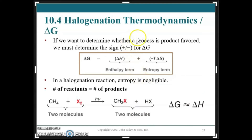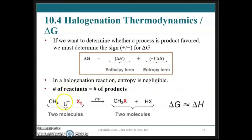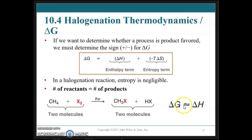Next we look at the thermodynamics of halogenation. Looking at the Gibbs free energy expression, we have the enthalpic and entropic terms. For radical reactions, the number of moles of reactants equals the number of moles of products, so we can treat the entropy term as essentially zero. Therefore, the Gibbs free energy for a radical reaction follows the same trend as enthalpy, and delta G is essentially equal to delta H.